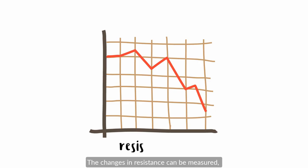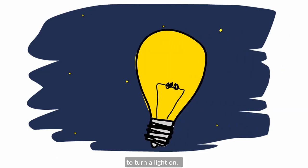The changes in resistance can be measured and used to drive other electronic components. For instance, as a room grows darker, a photoresistor can be used to turn a light on.